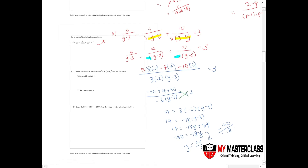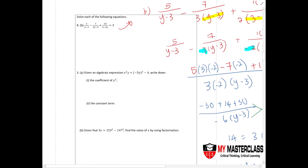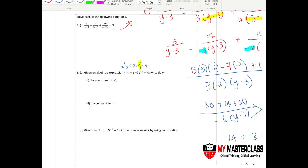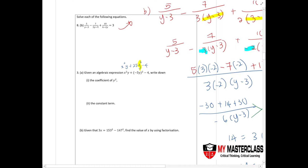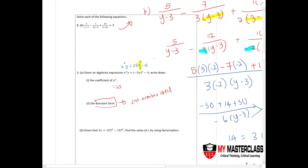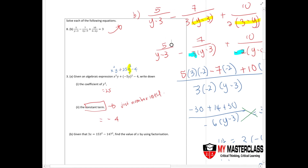Now let's look at question 3a. Given the algebraic expression, write down the coefficient of y squared. Expanding gives x squared y plus 25y squared minus 24 — notice that negative 5 squared becomes 25. The coefficient of y squared is simply 25. For the constant term — just the number itself with no variable — you must write negative 4, not just 4, because the sign must be included.